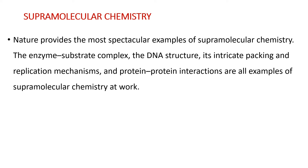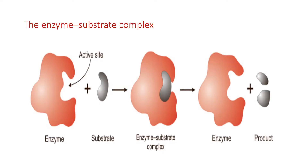Nature provides the most spectacular examples of supramolecular chemistry. These include the enzyme-substrate complex, the DNA structure with its intricate packing and replication mechanisms, and protein-protein interactions. The enzyme-substrate complex is a temporary molecule formed when an enzyme comes into contact with its substrate. Without its substrate, an enzyme is a slightly different shape. The substrate causes a conformational change when it enters the active site, which is the area of the enzyme capable of forming weak bonds with the substrate.